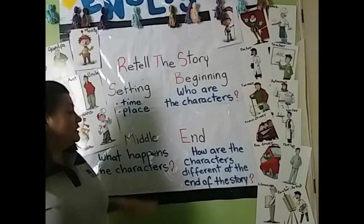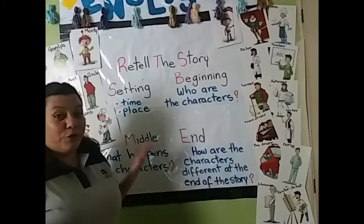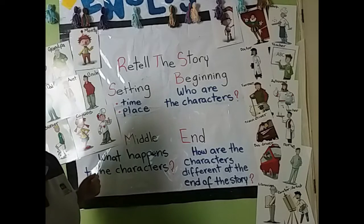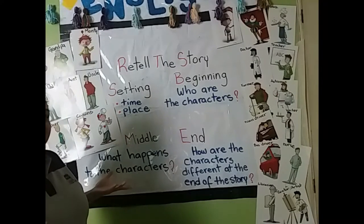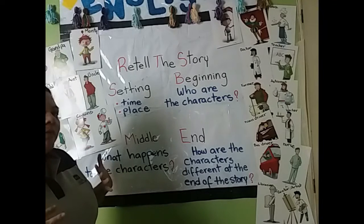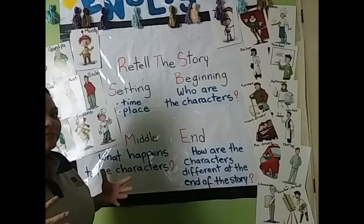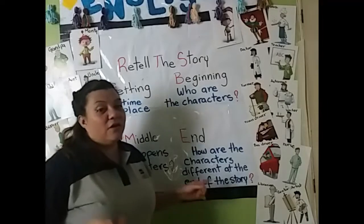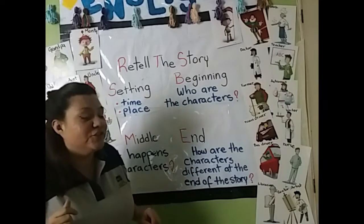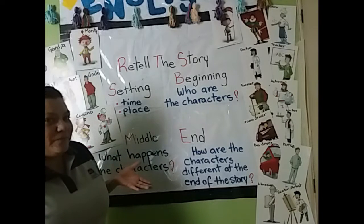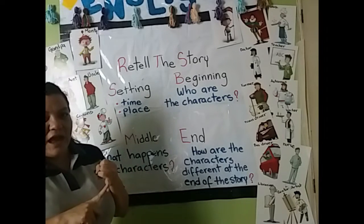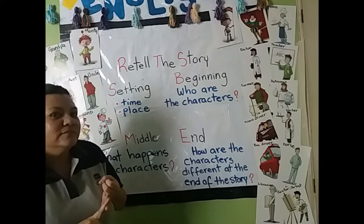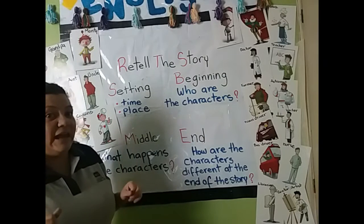Now, let me explain the middle and the end of the retell story. In the middle, we have to describe what happens to the characters. Are they having a problem in the story — a conflict, a situation? You have to describe this in the middle. In the end, we are going to describe how the characters are different at the end of the story. Have they changed? Have they resolved the problem or the conflict? Do we have a happy ending or a bad ending?